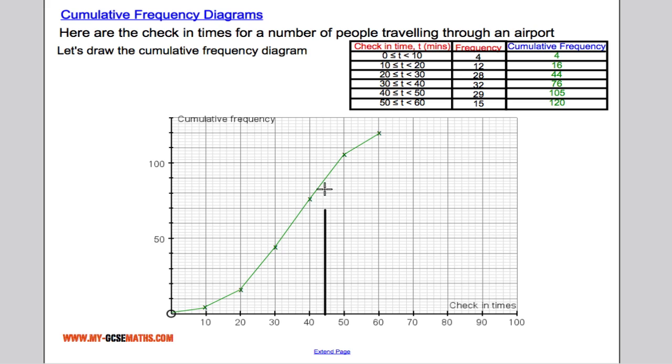I would go to 45 minutes, draw a line up where it hits the graph and across. I would say that roughly 89 or 90 people, say 89 people, were less than 45 minutes.